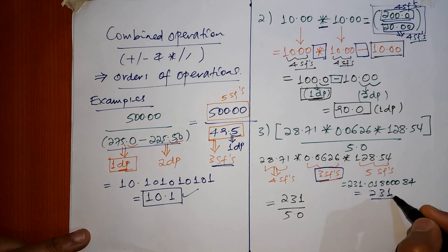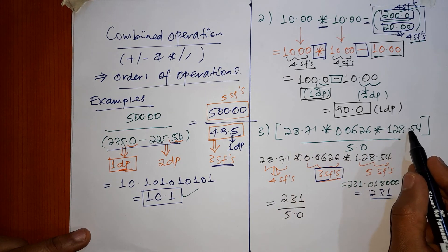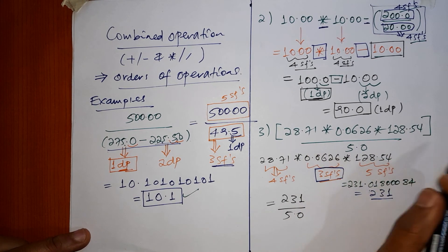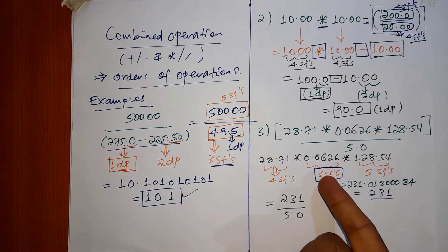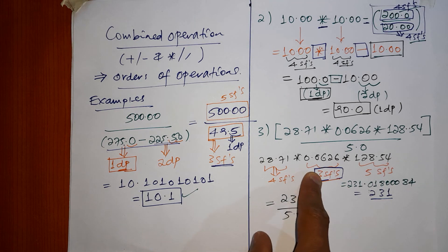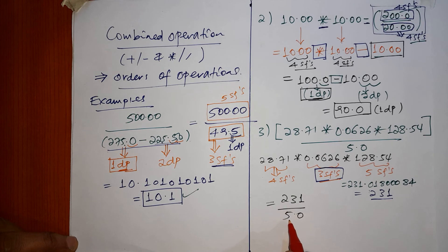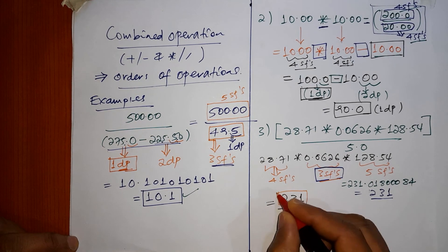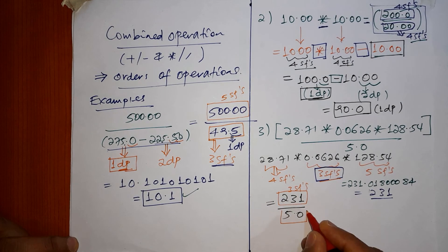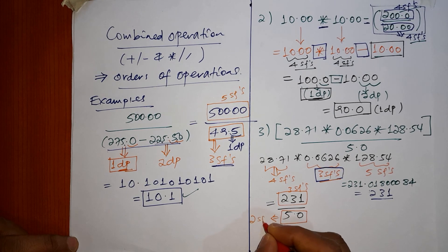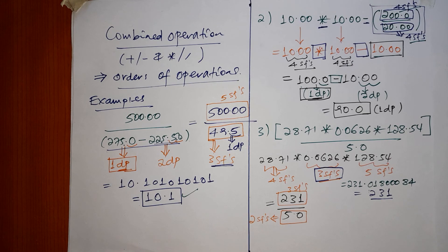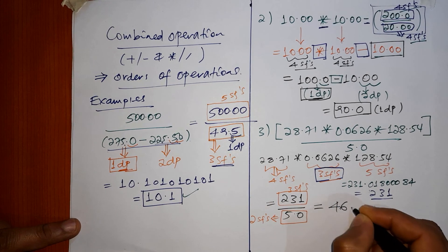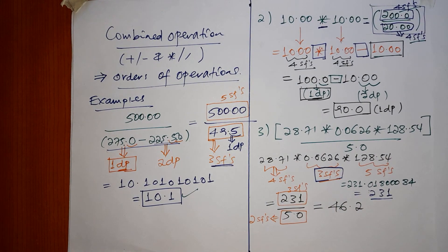231 is the result of the product of those three numbers. Now 231 divided by 5.0: 231 has 3 significant figures and 5.0 has 2 significant figures. The result should be at the level of the fewest significant figures, which is 2. The calculator gives 231 divided by 5.0 = 46.2, and with 2 significant figures the appropriate result is 46.